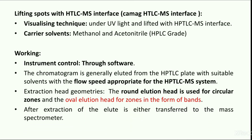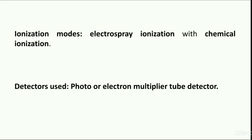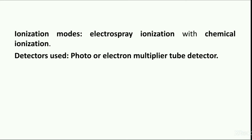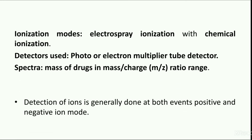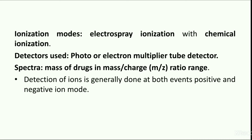After extraction, the eluate is either transferred online to the mass spectrometer or collected in a sample vial for further offline analysis. Analytes present in the eluate undergo ionization in the mass spectrometer; preferred ionization techniques include electrospray ionization and chemical ionization. Further, ions are accelerated through electric voltage and separated according to their mass-to-charge ratio, and finally detected through the detector. Detection of ions is generally done in both positive and negative ion modes.